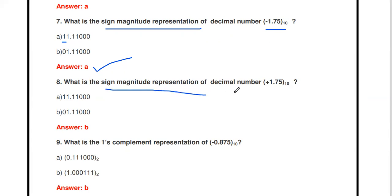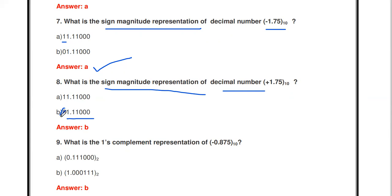What is the sign magnitude representation of the decimal number +1.75? For +1.75, the MSB is 0. The representation is 0 1.11.